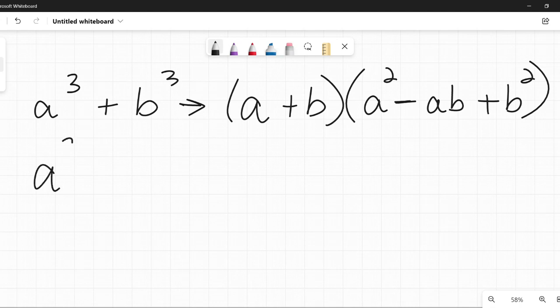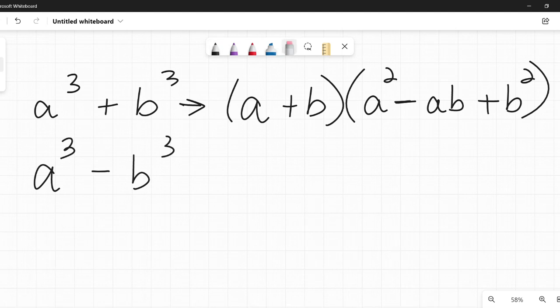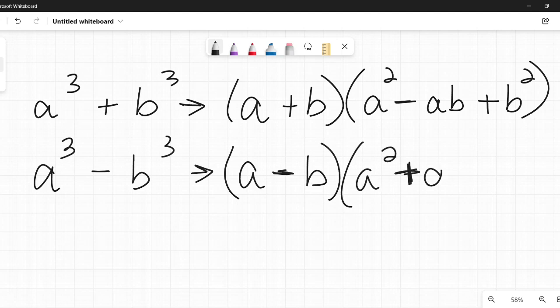The other version is the difference of cubes, which is a cubed minus b cubed. Same thing, a cubed, b cubed doesn't mean it has to be just a number cubed or a variable cubed. It can be 4x that was cubed. So for this one, it's so close to the one above. Only difference, this changes to a minus b, and this one changes to a plus right there.